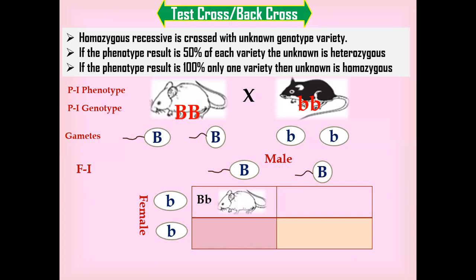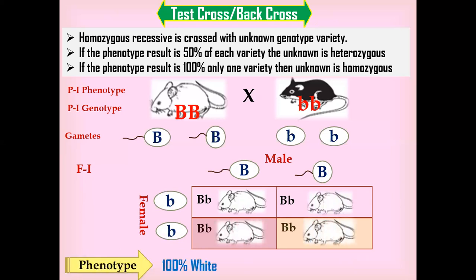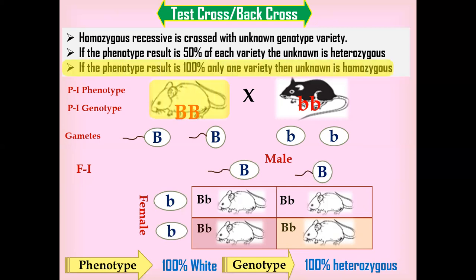Similarly, the other egg with lowercase b also fertilizes with a sperm carrying capital B and produces a heterozygous white variety. The phenotypic result is 100% white with the dominant trait, and the genotypic result is 100% heterozygous. This confirms the unknown variety is homozygous dominant, since 100% show only one variety.